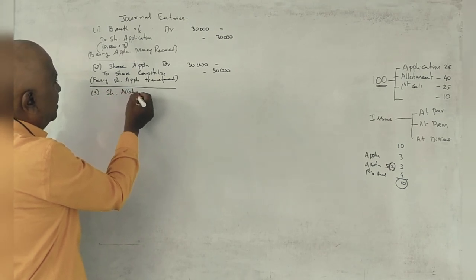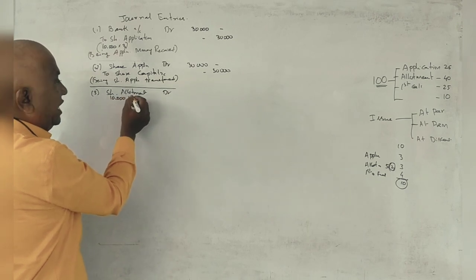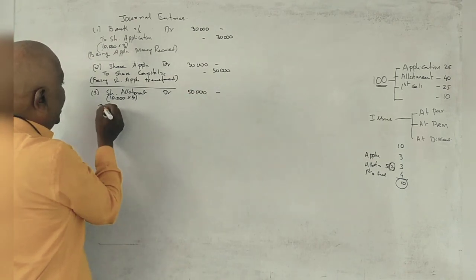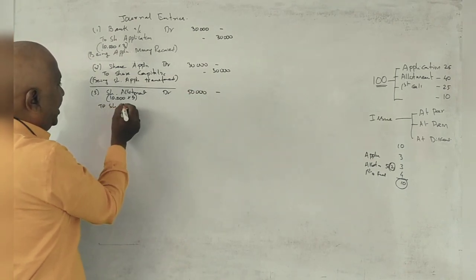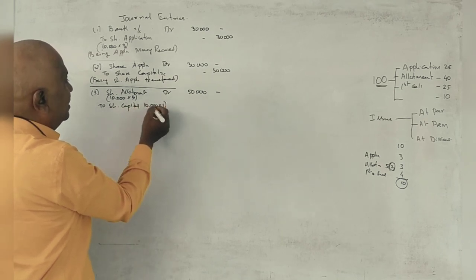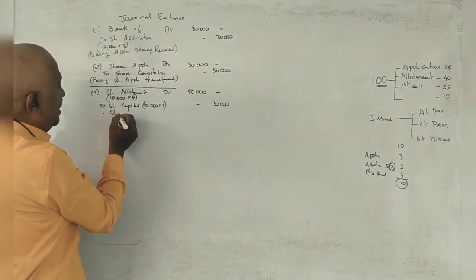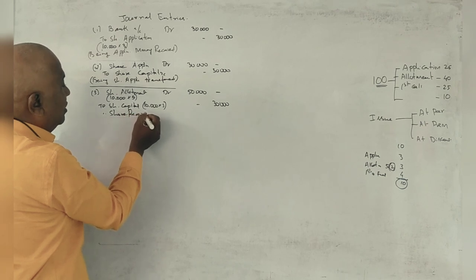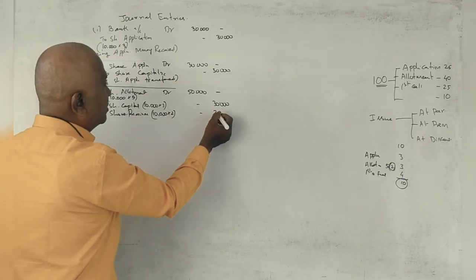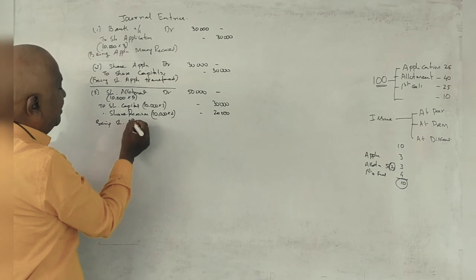Next is very important, share allotment account debit. See, 10,000 shares we have issued at Rs. 5 including premium, so Rs. 50,000. In this Rs. 5, share capital amount belongs to Rs. 3, so then this becomes Rs. 30,000. Then remaining amount belongs to share premium account. What is the amount of premium? Rs. 2 per share, so Rs. 20,000. Being share allotment money due.